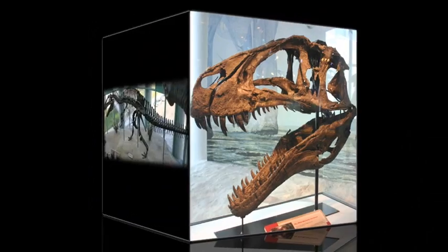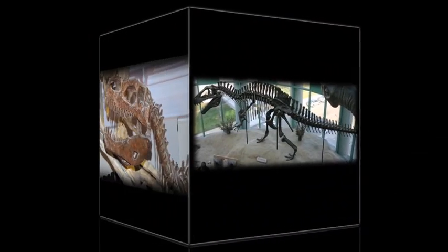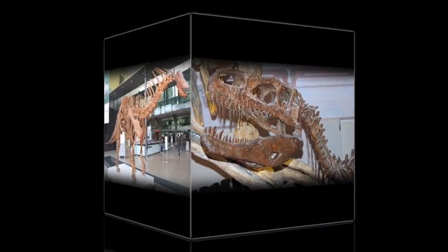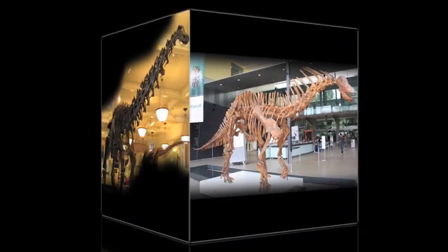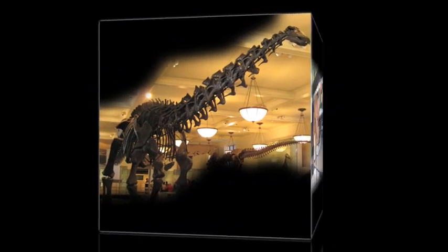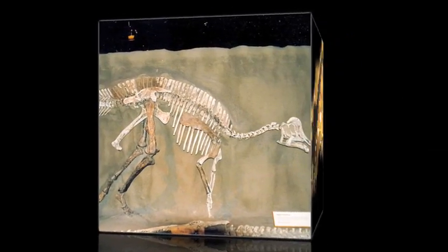Macroevolution is evident in abundance in the fossil record. Species come and go, and when they emerge, it is always from an ancestor.